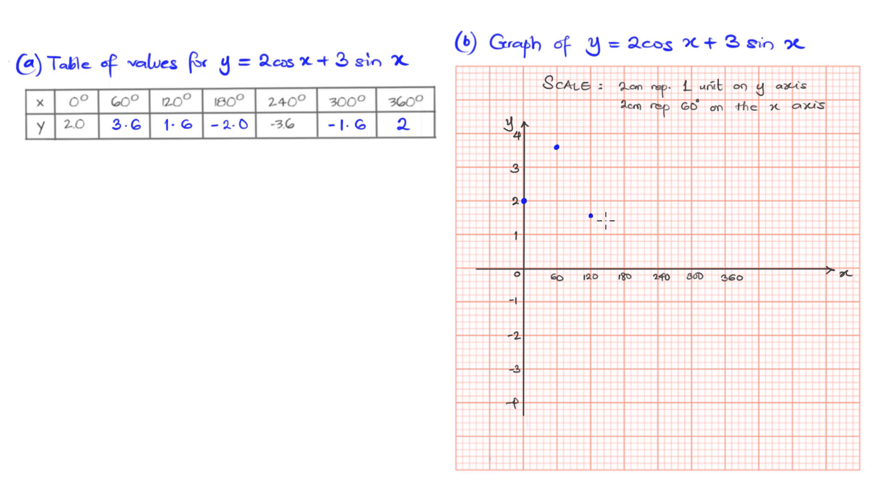Then when x is 120 degrees, y is 1.6. When x is 180 degrees, y is -2, as shown in the cross. I'm just dotting it out now. When x is 240 degrees, y is -3.6. That's here, where the mid is here. So this is -3.6.